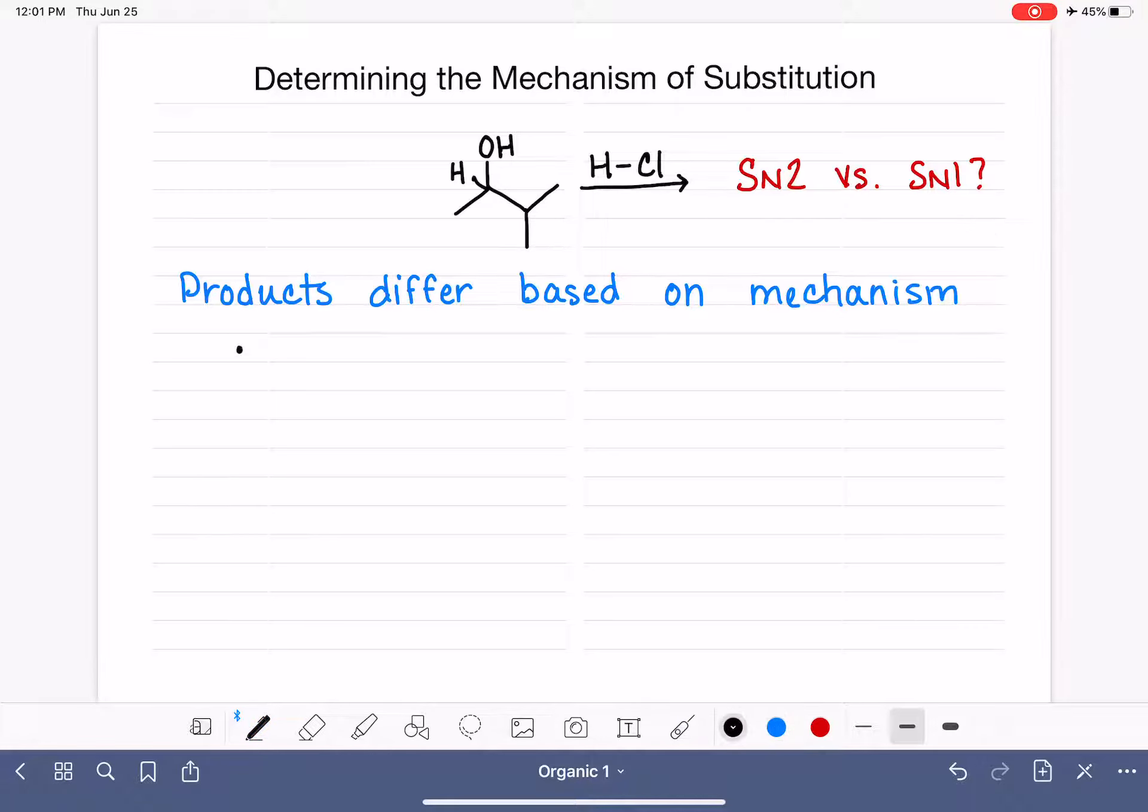One way is just simply the stereochemistry. If we have an SN2 mechanism, we will get 100% of a particular enantiomer. We'll either have 100% R or 100% S. But if we're looking at the SN1 mechanism, we'll get a racemic mixture, which means we'll get 50% R and 50% S.